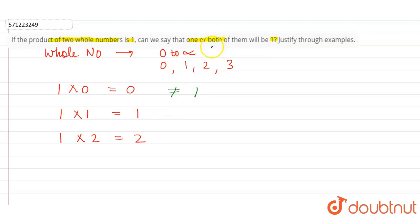...or when both the whole numbers are one, then only the product of two whole numbers is one. Otherwise, it is not possible.